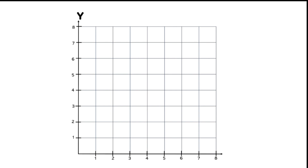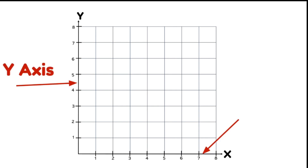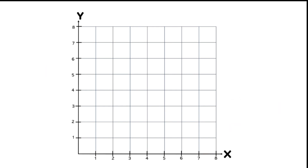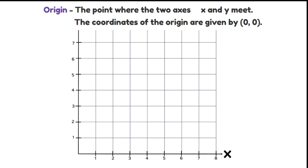A coordinate plane, or coordinate grid, is a space where two number lines intersect. A coordinate plane has two axes: the y-axis, which is the vertical axis, and the x-axis, which is the horizontal axis. The point where these two lines meet is called the point of origin.